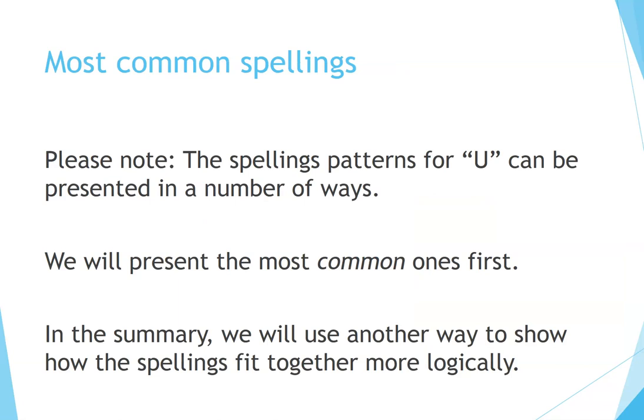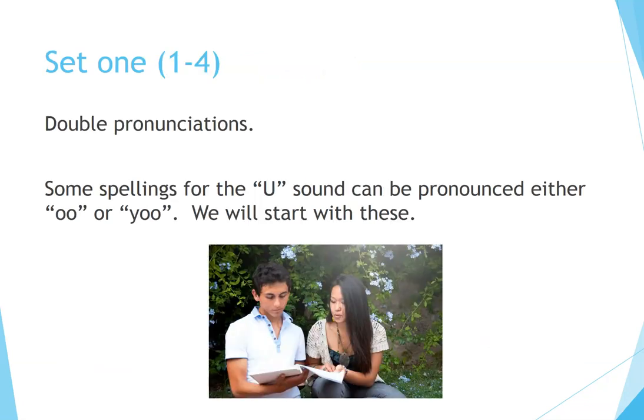Most common spellings. Please note, the spelling patterns for OO can be presented in a number of ways. We will present the most common ones first. In the summary, we will use another way to show how the spellings fit together more logically. Set 1, numbers 1 to 4: double pronunciations. Some spellings for the OO sound can be pronounced either OO or U. We will start with these.